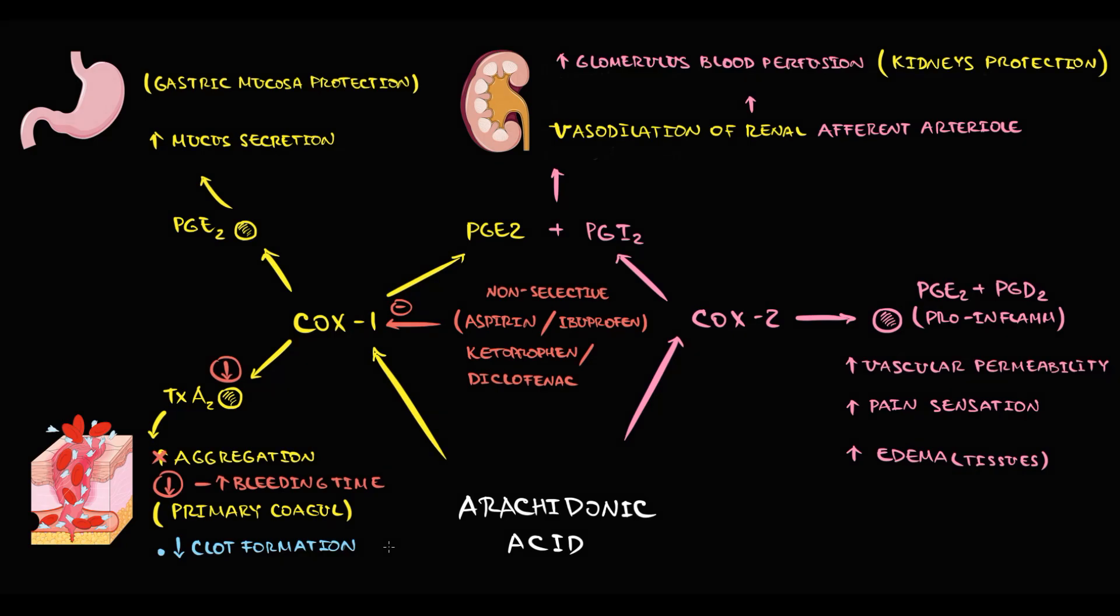With blockage of COX-1 enzyme, the production of prostaglandin E2 decreases. As a result, mucous secretion will decrease. The problem is that with decreasing mucous secretion, the protection against hydrochloric acid decreases. The stomach will become more vulnerable to hydrochloric acid, and this will significantly increase the risk of gastric ulcers.